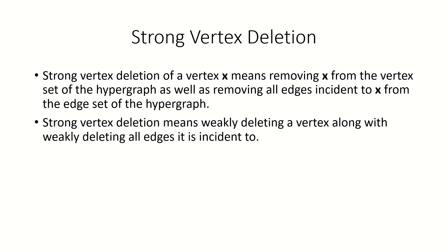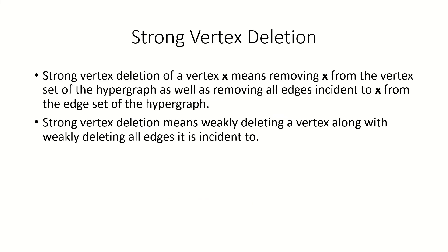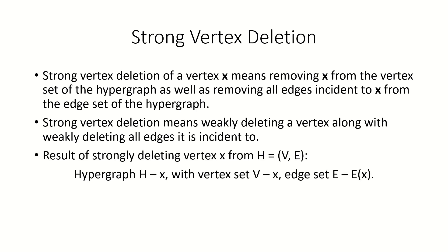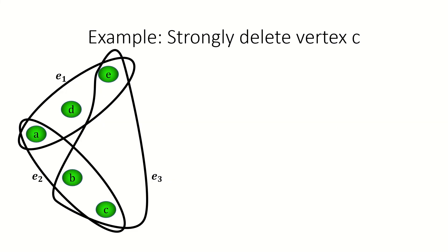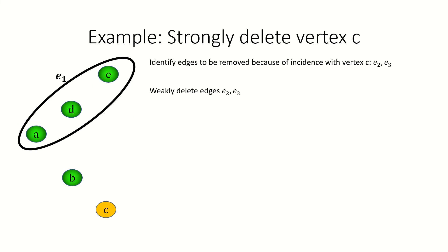Here's an example of strongly deleting vertex d from this hypergraph. The result of strongly deleting a vertex x from a hypergraph H is a new hypergraph H minus x, where we note the minus means strong vertex deletion. This new hypergraph has vertex set V minus x, and edge set E minus E of x, where E of x is the set of edges incident to x. As another example, let's strongly delete vertex c. First, identify the edges that vertex c is incident to — those would be edges e sub 2 and e sub 3. Next, weakly delete those edges. Finally, weakly delete vertex c. This is our result.